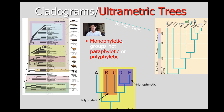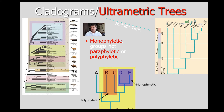Sometimes you'll see what are called ultrametric trees, which is the same idea, except the branches have times associated with them. In this case, you can see there's geological timescale information superimposed upon the cladogram. We call those ultrametric trees.